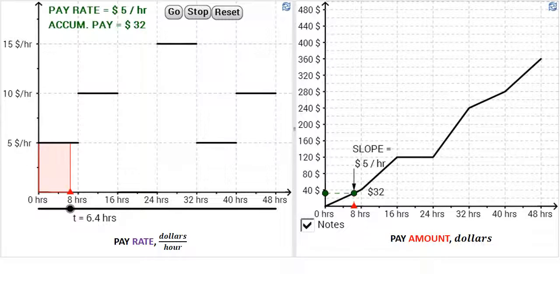Let's look at an example involving a paycheck. On the left, you'll see a graph that shows the rate of pay in dollars per hour for a job over a period of 48 hours. The rate of change varies from day to day, so for each eight-hour period we have a different dollar per hour rate.